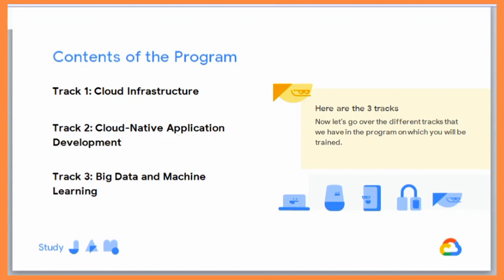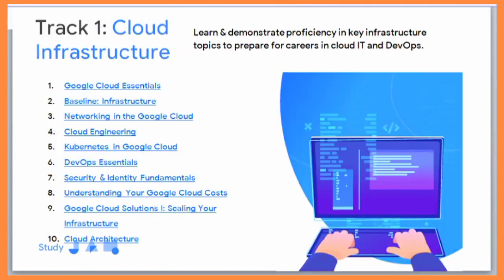There are three tracks in this program. The first track is Google Cloud Infrastructure, the second is Cloud Native Application, and the third is Big Data and Machine Learning. For each track completion, there are different types of swags and goodies available.